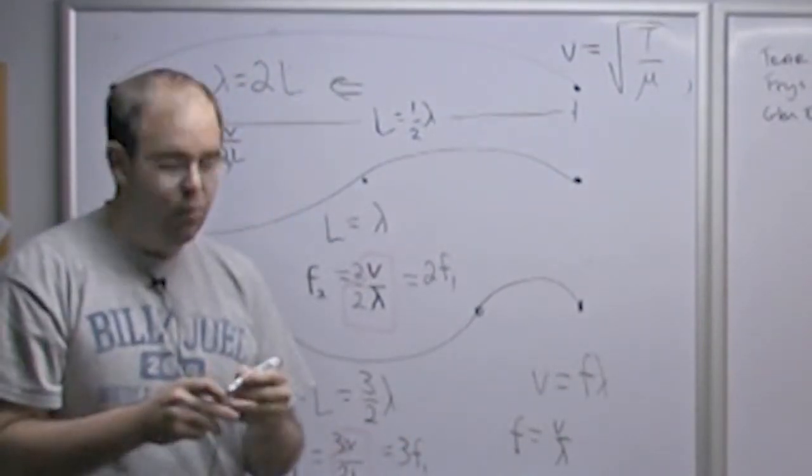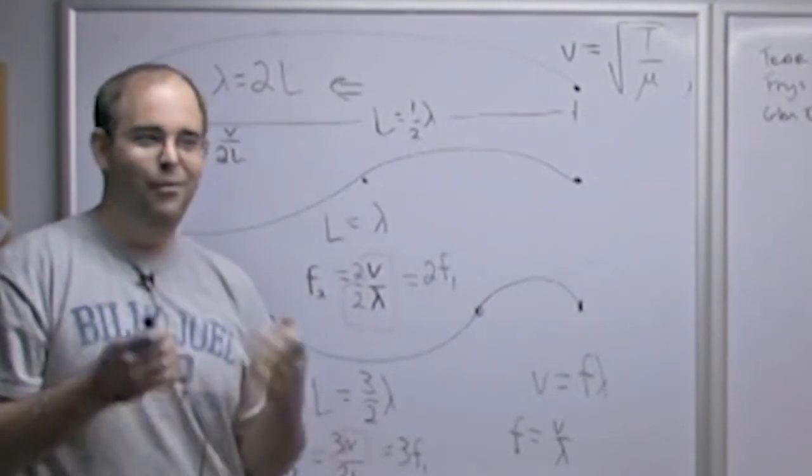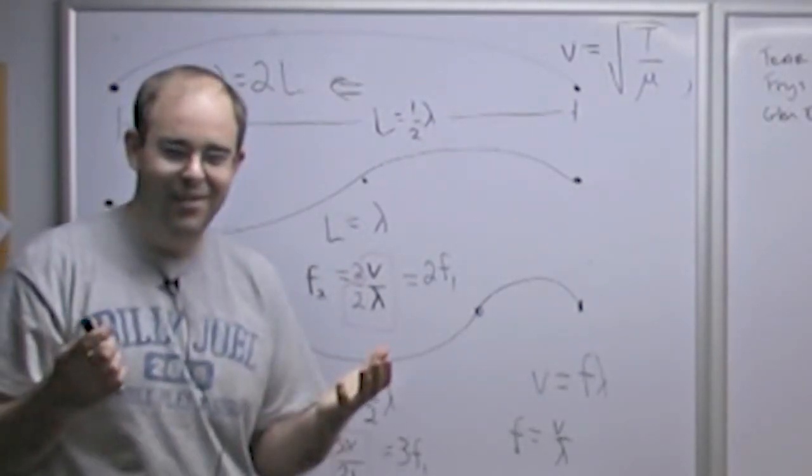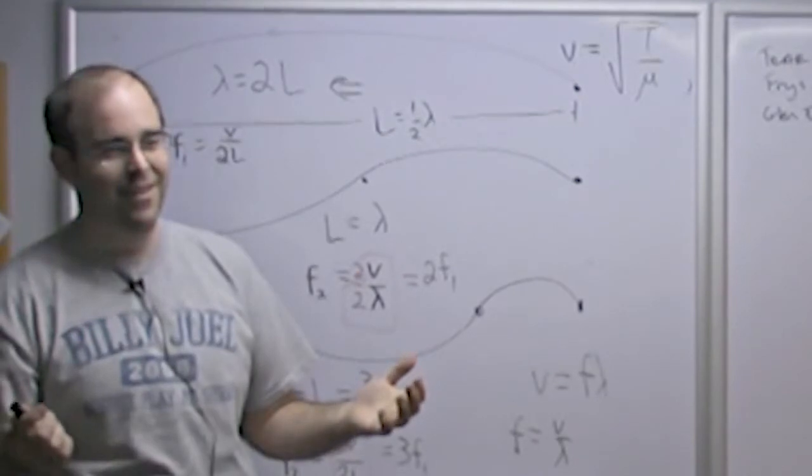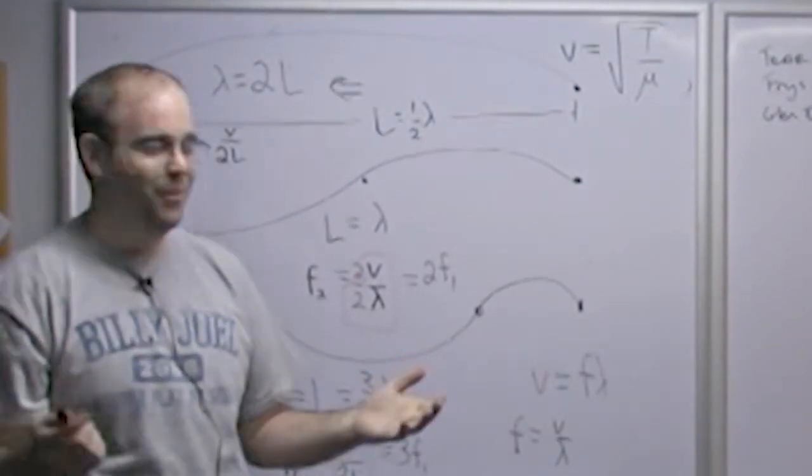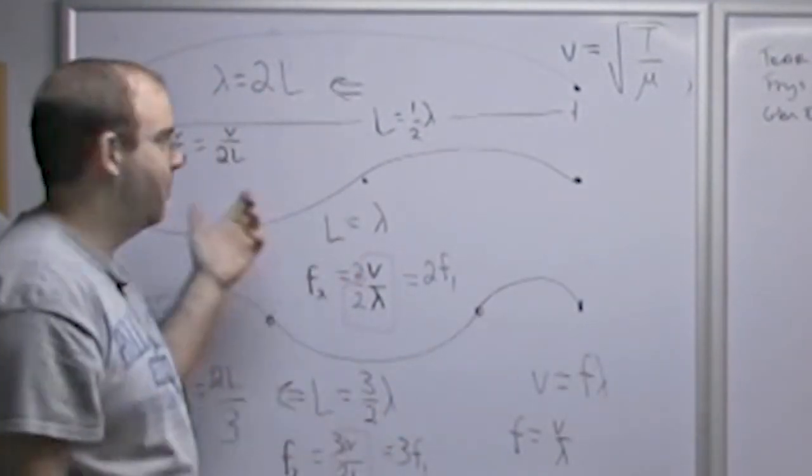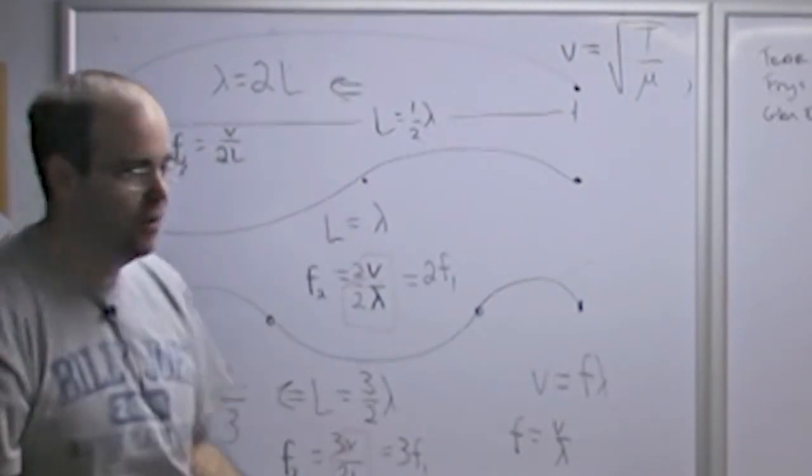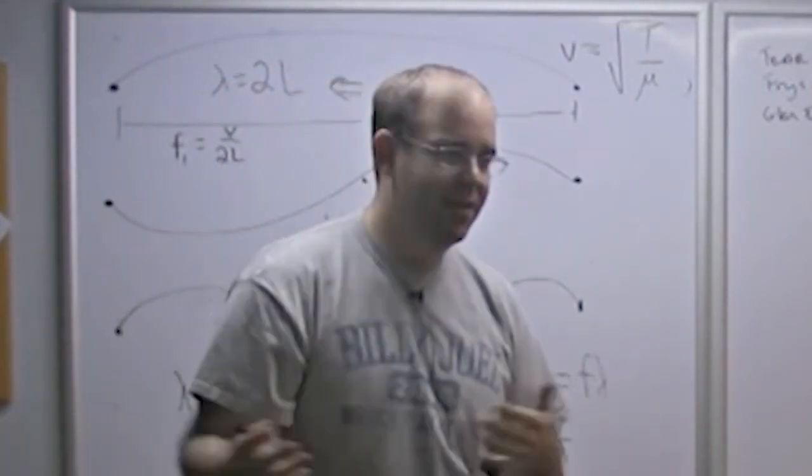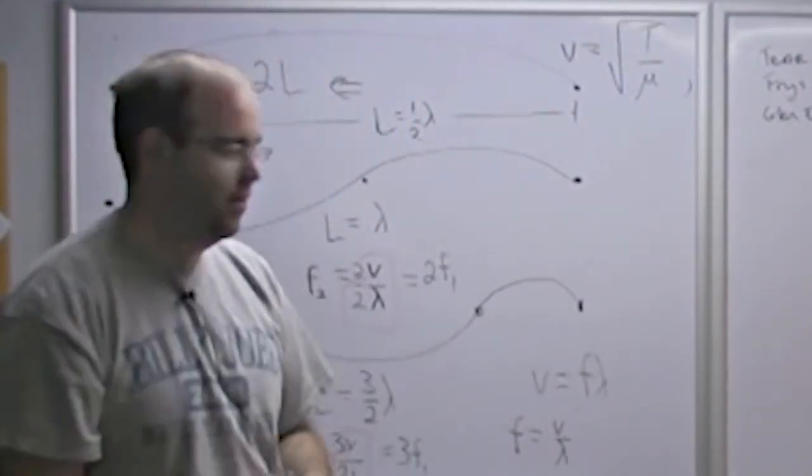So if you wanted to calculate the frequency of the fourth resonance, what do you suppose it would be? 4 times F1. Exactly. If you wanted to know the ninth resonant frequency, it would be 9 times F1.